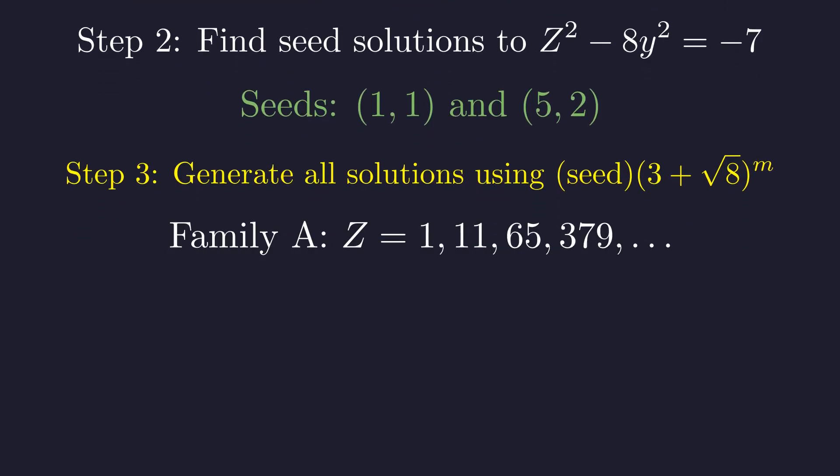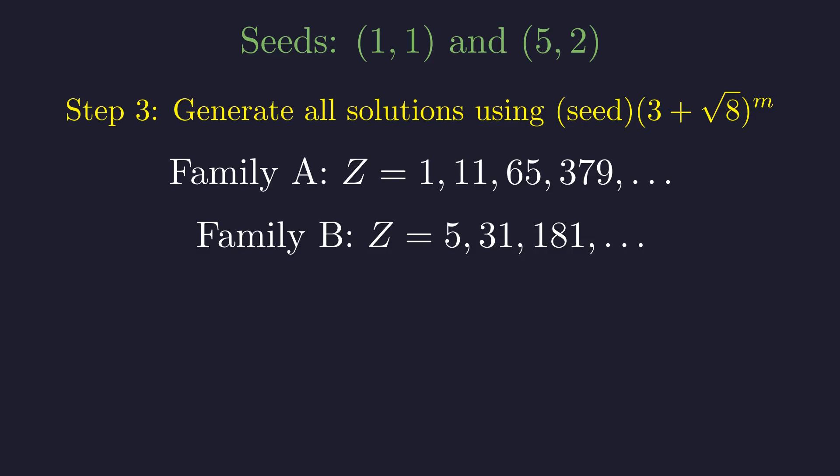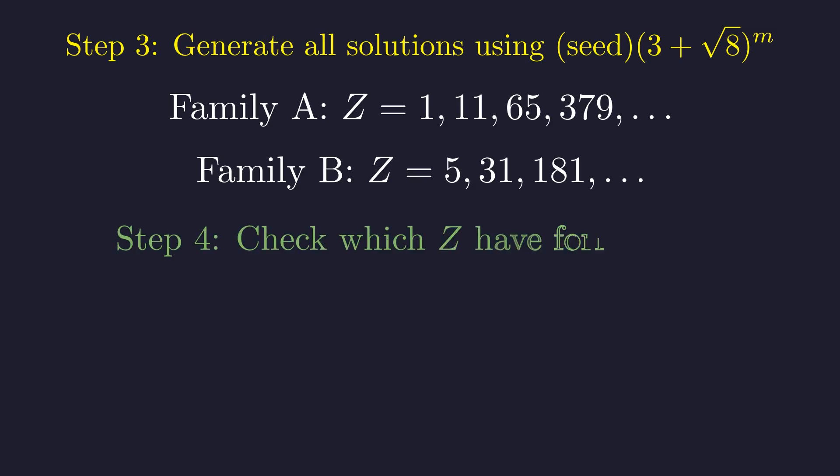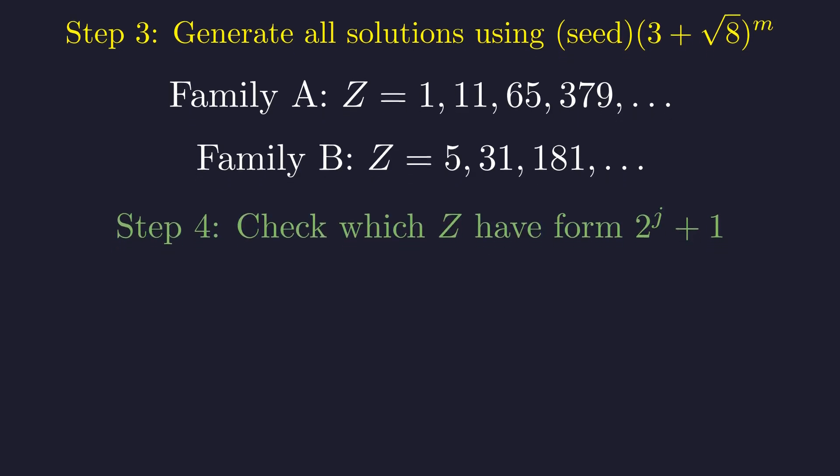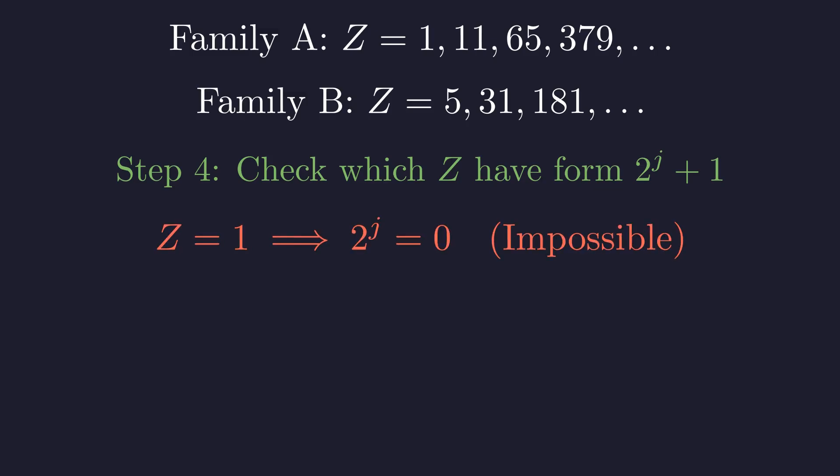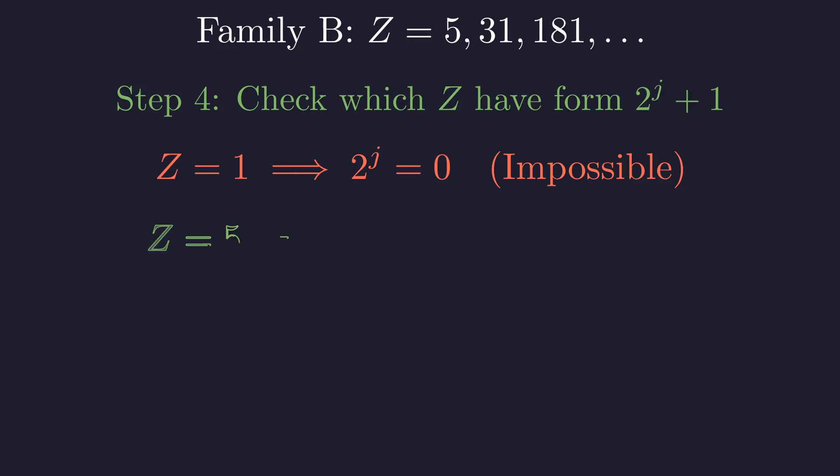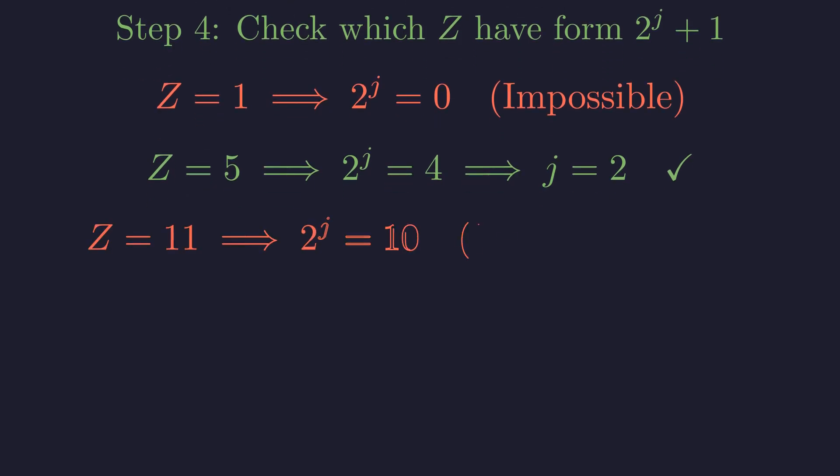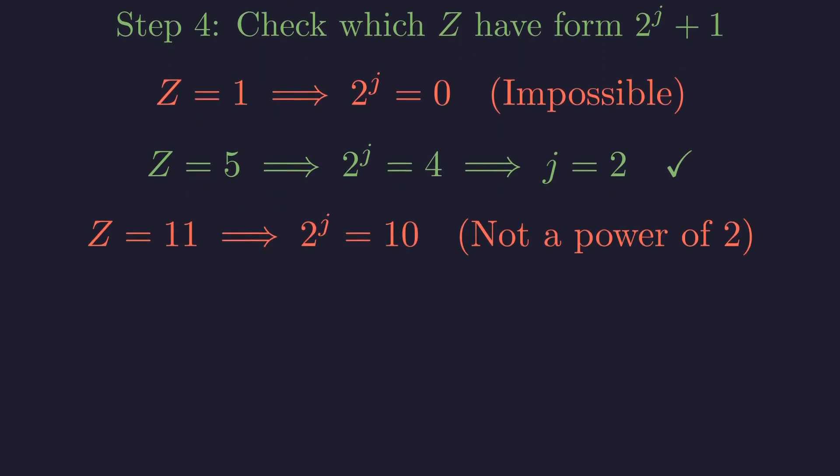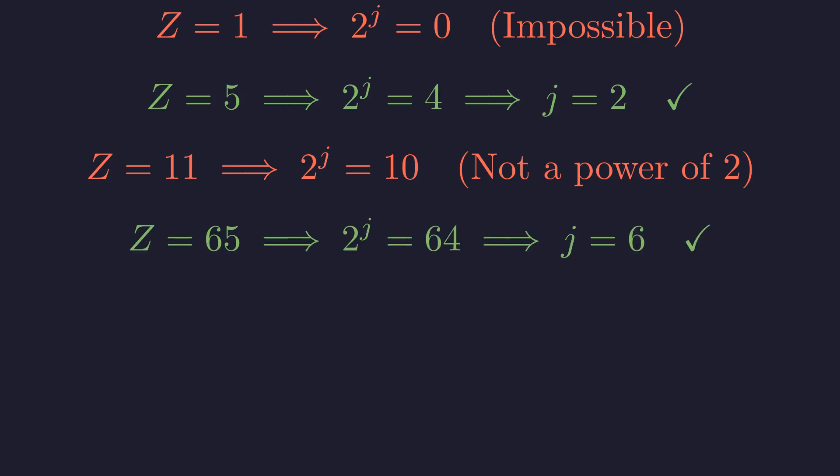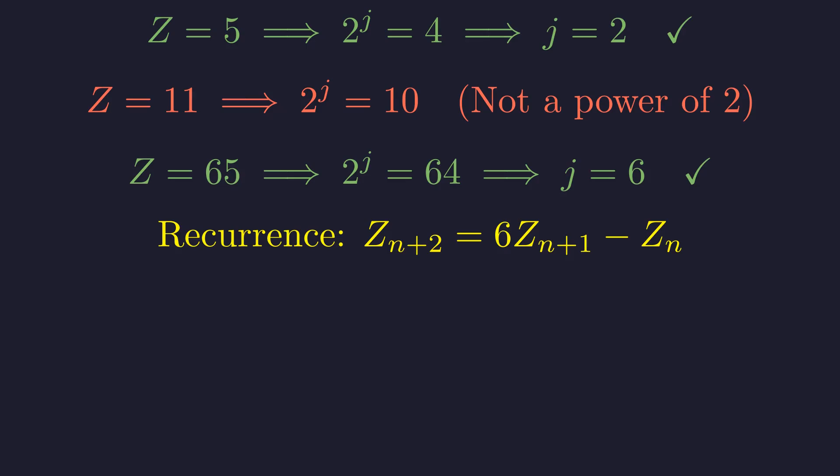The first family gives z values 1, 11, 65, 379, and so on. The second family starts with 5, 31, 181 continuing infinitely. Now we check which of these z values can be written as 2 to the j plus 1. Z equals 1 gives 2 to the j equals 0. Impossible. Z equals 5 gives 2 to the j equals 4. This works with j equals 2. 11 minus 1 equals 10, which is not a power of 2. Z equals 65 gives 2 to the j equals 64. This works with j equals 6. All z values follow this recurrence relation. Advanced modular arithmetic proves no other solutions exist.